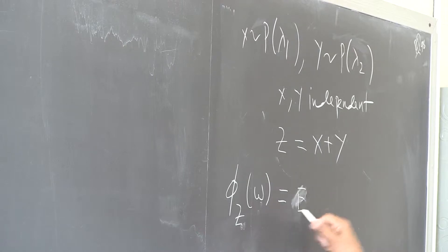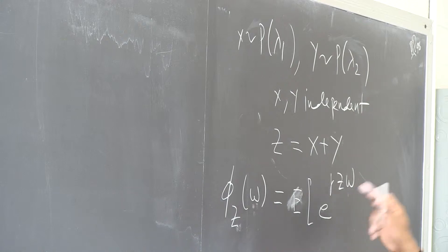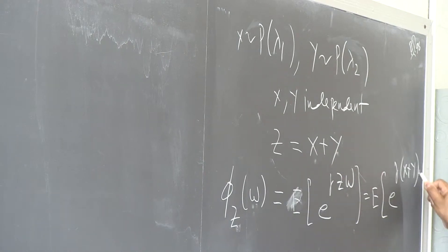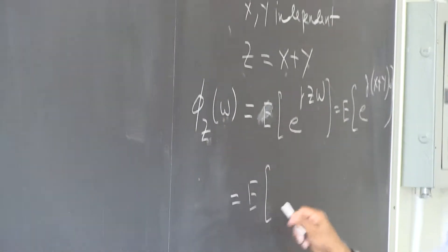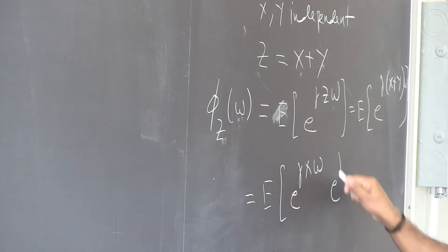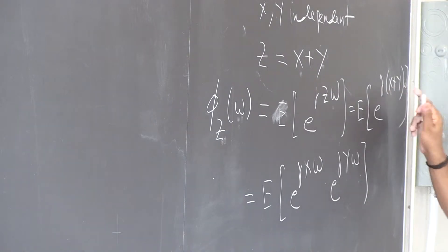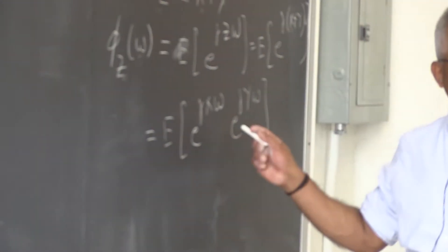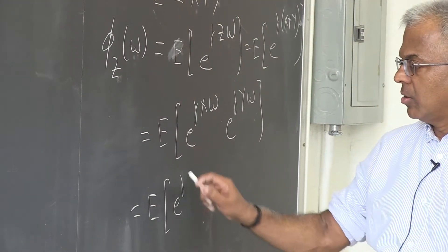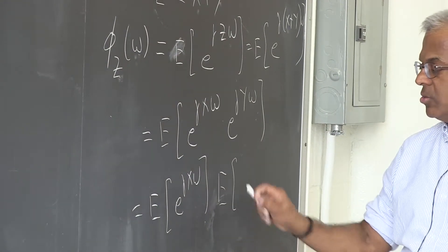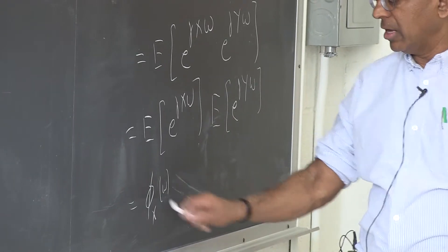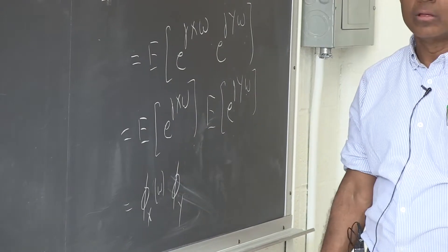The characteristic function of Z is by definition E[e raised to j·z·ω]. Substituting Z = X + Y, this becomes E[e raised to j(x+y)ω], which equals E[e raised to j·x·ω times e raised to j·y·ω]. Because X and Y are independent, this becomes the product: the characteristic function of X evaluated at ω multiplied by the characteristic function of Y evaluated at ω.